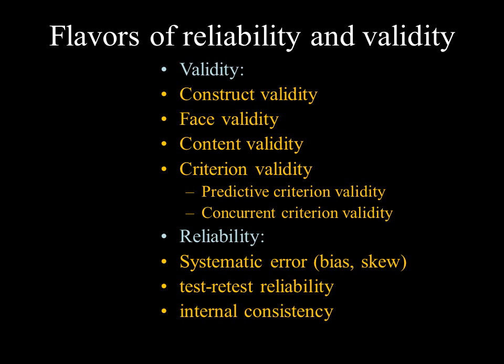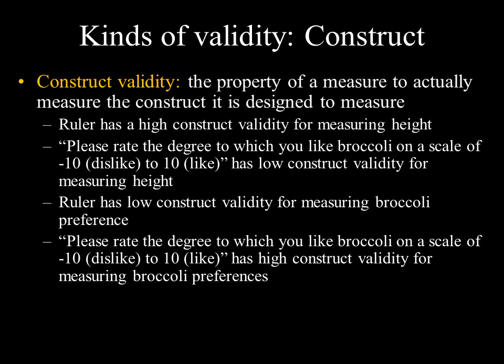There are different flavors of reliability and validity. For validity there's construct, face, content, and criterion validity — the last of which divides into predictive and concurrent. For reliability we have systematic error, test-retest reliability, and internal consistency. Starting with construct validity: this is the property of a measure to actually measure the construct it's designed to measure — whether your empirical construct is a good measure of your theoretical construct.